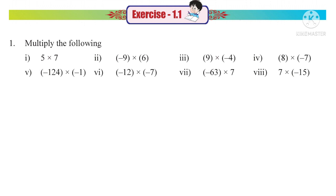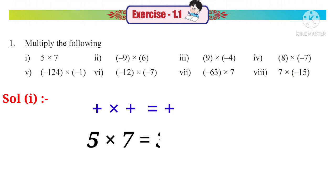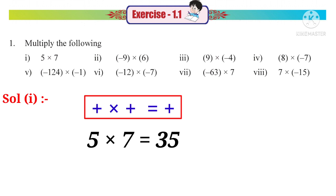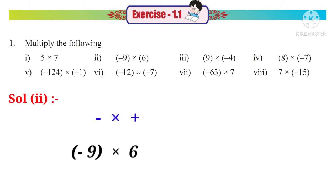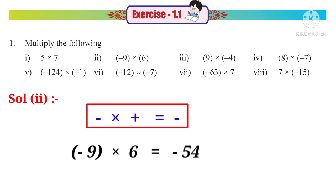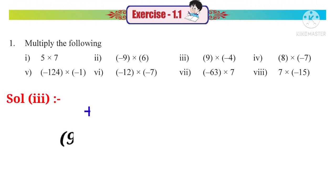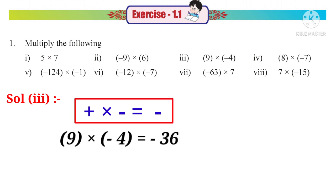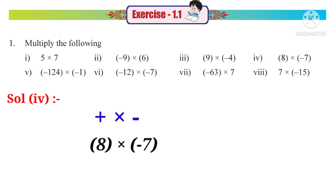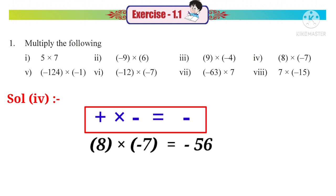Exercise 1.1, Question 1 — Multiply the following. Solution 1: 5 into 7. Both are positive integers, plus into plus is plus, so 5 into 7 equals 35, a positive integer. Solution 2: minus 9 into 6. Minus into plus is minus, so minus 9 into 6 equals minus 54, a negative integer. Solution 3: 9 into minus 4. Plus into minus is minus, so 9 into minus 4 equals minus 36. Solution 4: 8 into minus 7. Plus into minus is minus, so 8 into minus 7 equals minus 56, a negative integer.